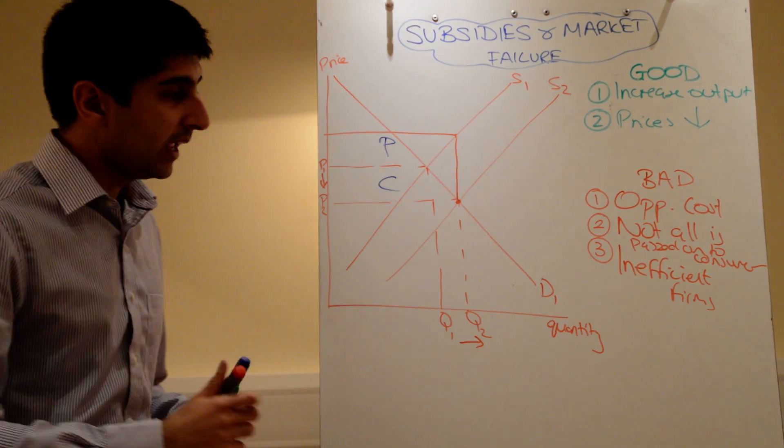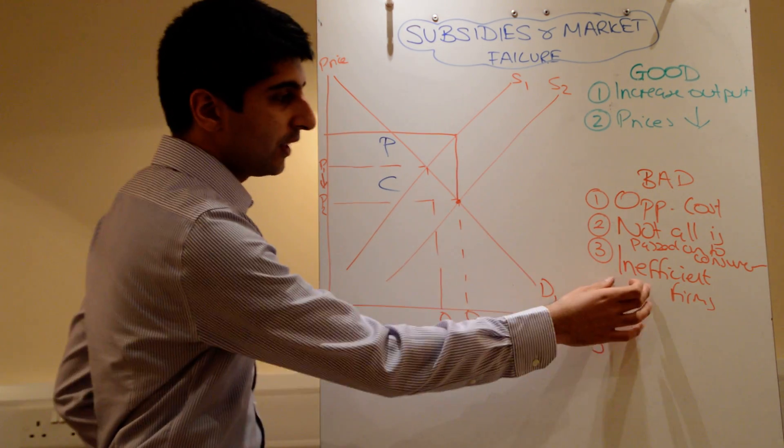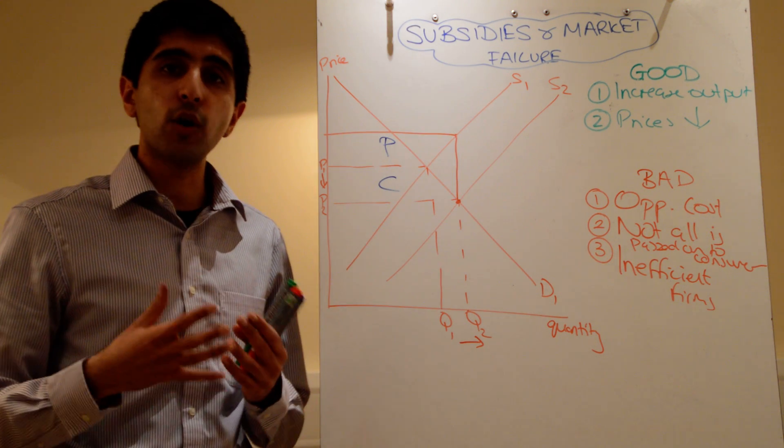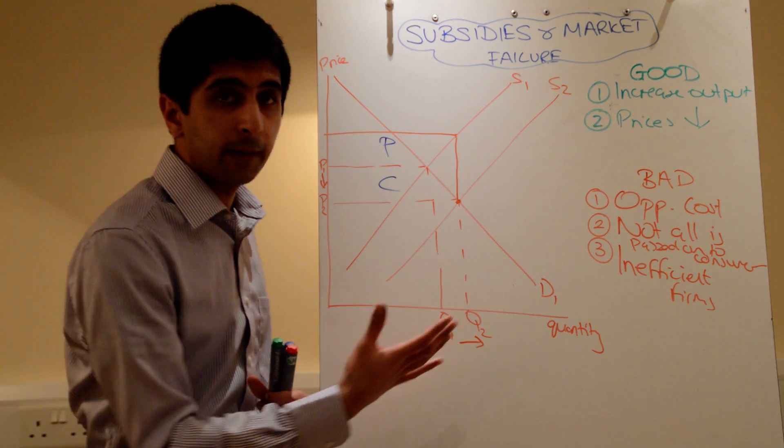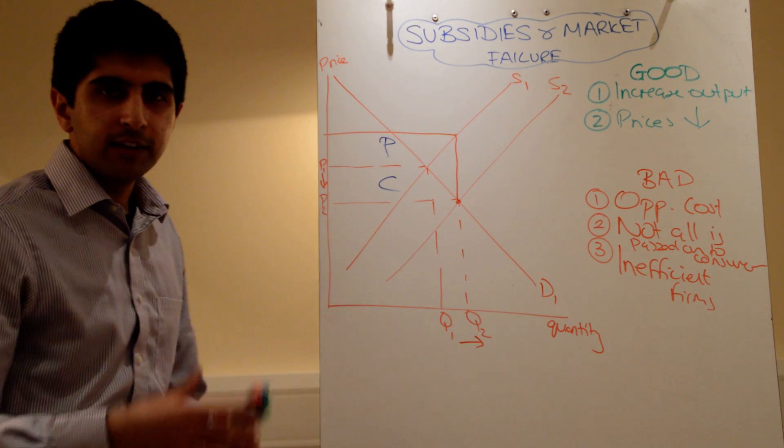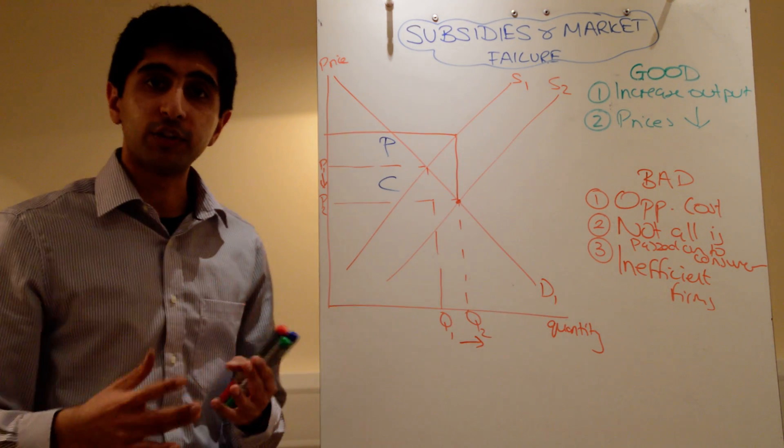Also, if the subsidy is given to inefficient firms, it might not be best targeted. Because these firms are being wasteful, the subsidy is just going to incentivize them to carry on being wasteful. That's not a good thing there. So, in that sense, governments need to make sure that they're giving it to the right firms. Given to inefficient firms, the effect might be more diluted.